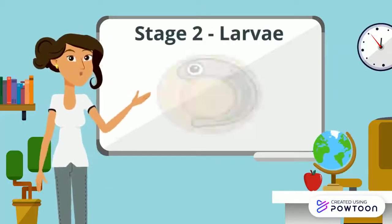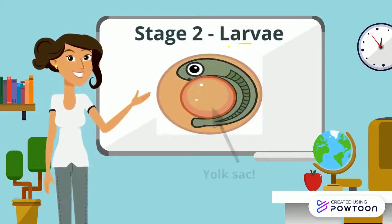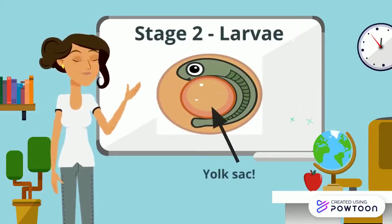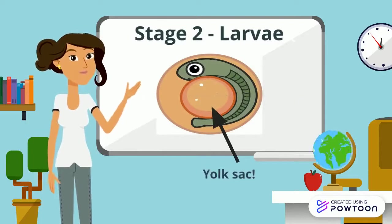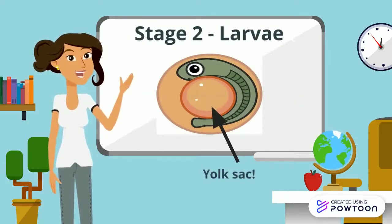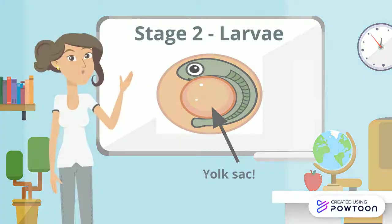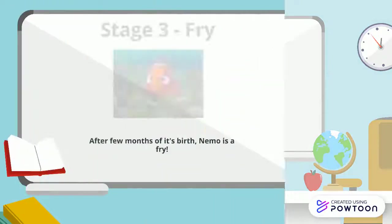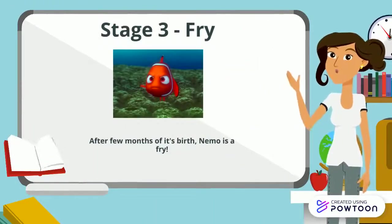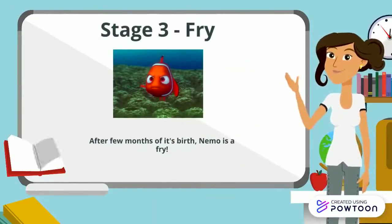Stage 2: the larvae. After the egg hatches, the larvae emerge from the eggs. They have a yolk sac attached to their body, which provides nutrition to the growing larvae.